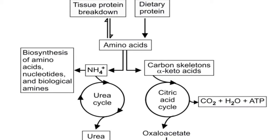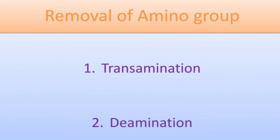Now looking at the left part of the diagram, this alpha amino group may be used for the synthesis of some nitrogenous compounds, amino acids, and biological amines. However, ammonia levels are maintained very low in the blood, and that is made possible by the urea cycle. The removal of the alpha amino group in the form of ammonia takes place by transdeamination — that is, transamination followed by deamination.